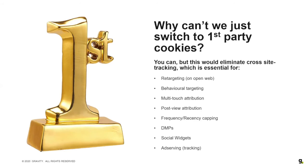Why don't we just switch to first-party cookies? Well, only the domain that sets them can read them — so as soon as a user leaves the site, we lose track of them. We need third-party cookies to understand where they go and tie it back. In a first-party-only environment, things like retargeting on the open web, behavioural targeting, multi-touch attribution, post-view attribution, frequency and recency capping — all of this is lost. DMPs — cookie stores used to segment users — are all predicated on third-party data. Even big walled gardens like Facebook rely on social widgets integrated in publisher websites to understand their users when they leave Facebook and tie that rich data back.